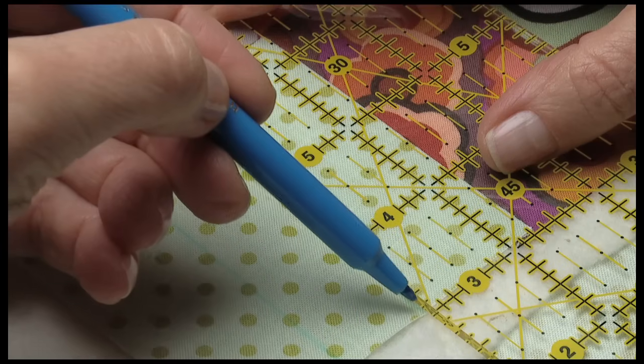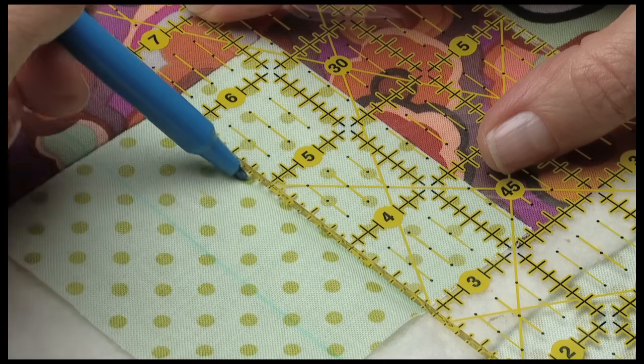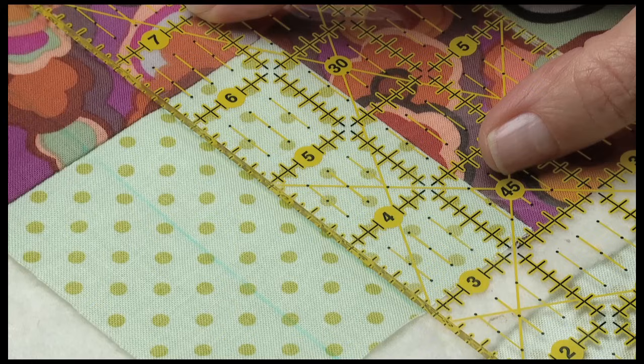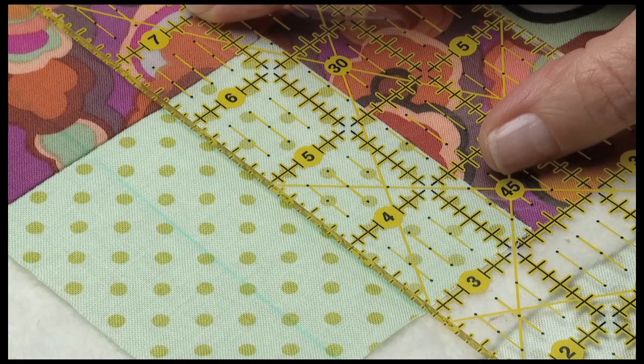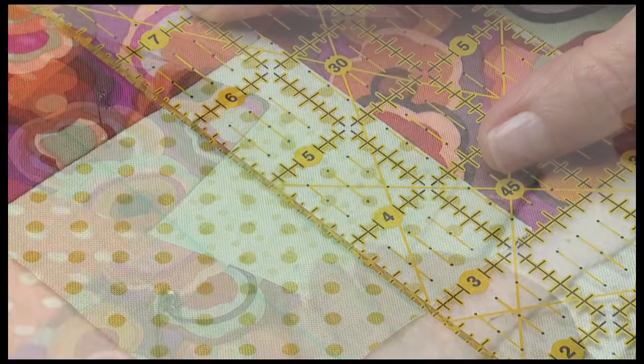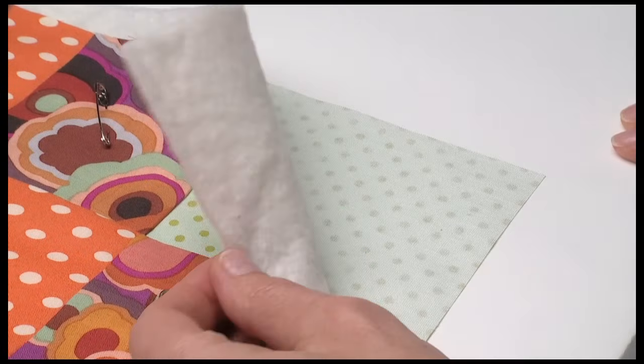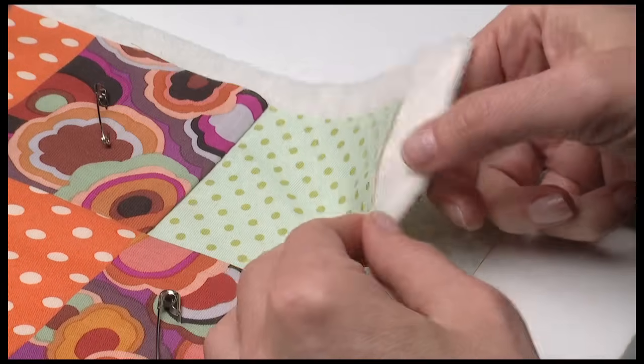Before sewing the quilt layers, if desired, draw stitching guidelines onto the fabric using a fabric marking tool and ruler. Secure the top fabric, batting and backing fabric together with pins or basting.